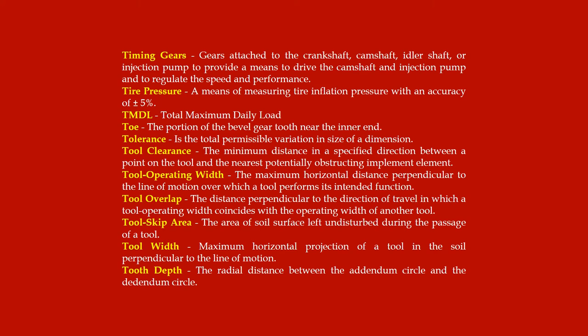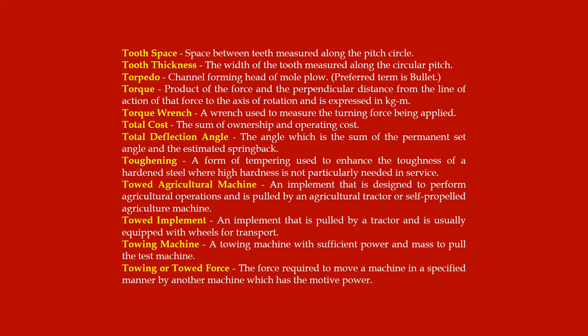Tool skip area: the area of soil surface left undisturbed during the passage of a tool. Tool width: the maximum horizontal projection of a tool in the soil perpendicular to the line of motion. Tooth depth: the radial distance between the addendum circle and the dedendum circle. Tooth space: space between teeth measured along the pitch circle. Tooth thickness: the width of the tooth measured along the circular pitch. Torpedo: the channel-forming head of a mole plow; the preferred term is bullet.